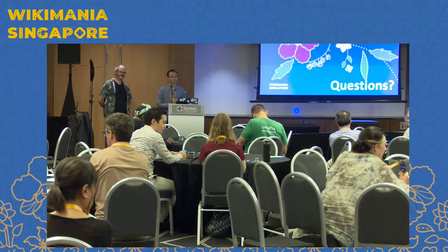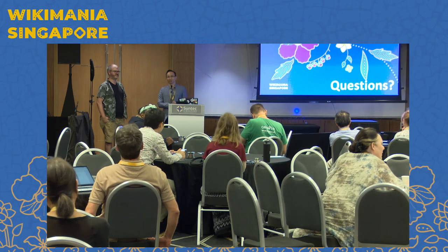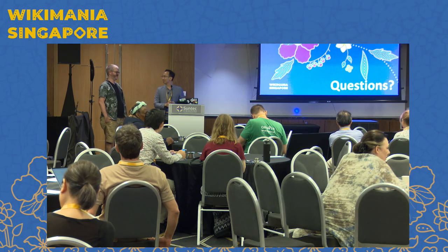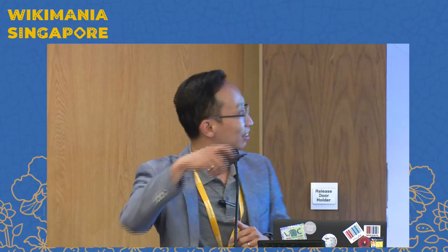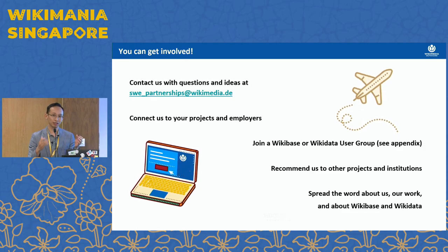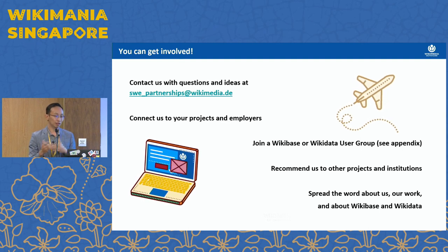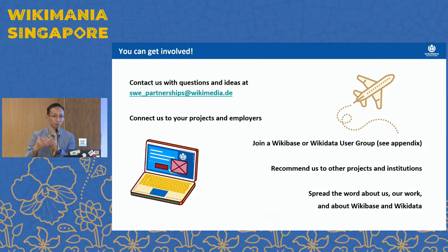There's a question from the YouTube section: do you think that Wikidata labels could be used for translation since these are not complete sentences? I'm not able to provide a meaningful answer to this question because we are not technically savvy enough with regards to this to give a satisfactory answer right now. But I encourage you to please send your question to swe_partnerships@wikimedia.de, explaining your use case and why you think it is important. We would check with the community or with our colleagues from the product side to give you a more satisfactory answer that meets the use case of the project you're working on.